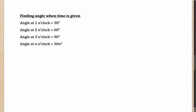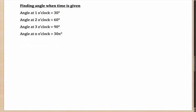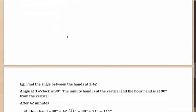The next idea is finding the angle when the time is given. You need to know one fundamental idea: at any perfect hour — at 1 o'clock, 2 o'clock, 3 o'clock — the minute hand is at 12, pointing vertically, at 0 degrees from the vertical. Whereas the hour hand at 1 o'clock has covered 30 degrees, at 2 o'clock 60 degrees, at 3 o'clock 90 degrees — at n o'clock it has covered 30n degrees. So at 7 o'clock it will be 210 degrees. Once you understand that, finding the angle at any time becomes very simple.